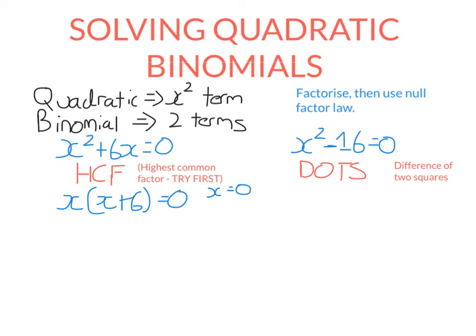So if x plus 6 equals zero, subtract 6 from both sides, you get x is minus 6. Remember, quadratic equations sometimes have two solutions, sometimes one.